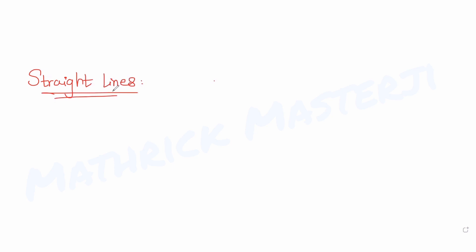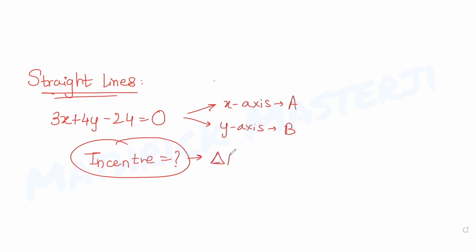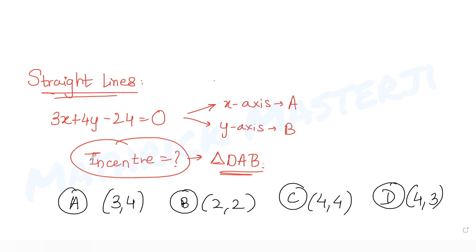The question tells us that the line 3x + 4y - 24 = 0 intersects the x-axis at point A and the y-axis at point B. We have been asked to find the incenter of triangle OAB, where O is the origin. The answer options given are: (3,4), (2,2), (4,4), and (4,3).